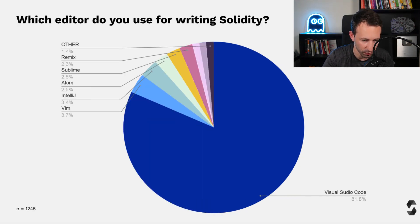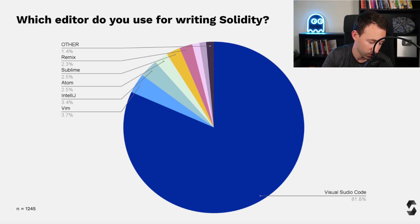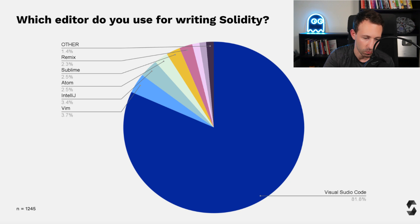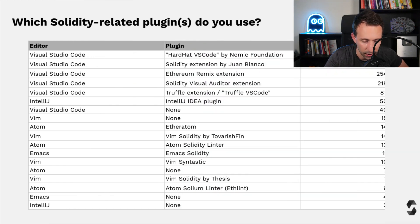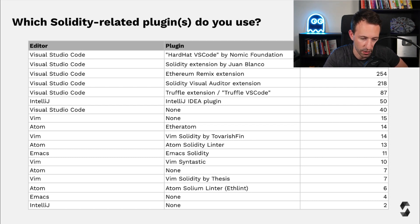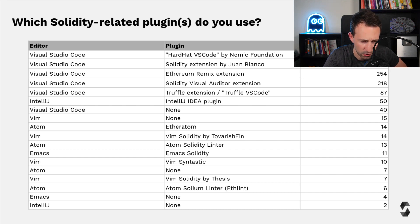Which editor do you use for writing Solidity? Without surprise, Visual Studio Code comes ahead — it has gotten really good the past few years with tons of plugins and a great user experience. I personally use Vim because I like a modal editor where you don't have to use the mouse at all, but for most people I would recommend VS Code. For Solidity-related plugins, the Solidity extension by Juan Blanco is still very popular, and the Hardhat VS Code extension has become the most popular one.